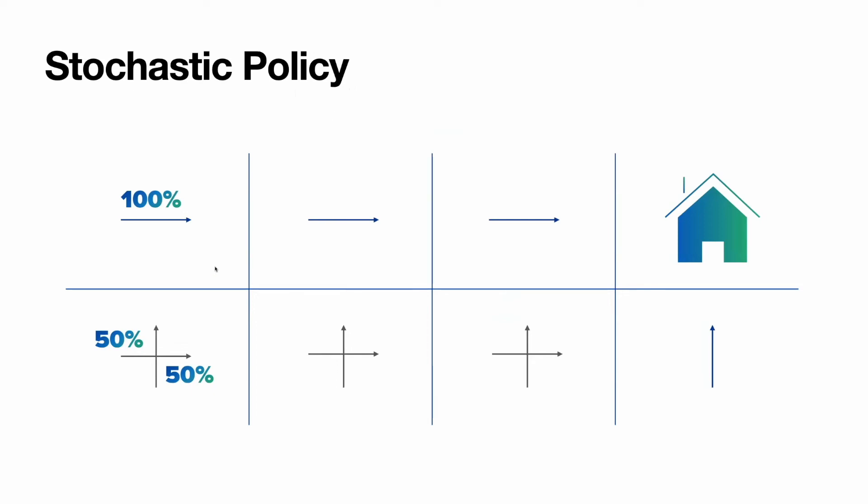For the same case, we will see the following picture. For these states, there are no options. There are no second optimal pathways. We only go right. So the probability of going right in these cells will be 100%.